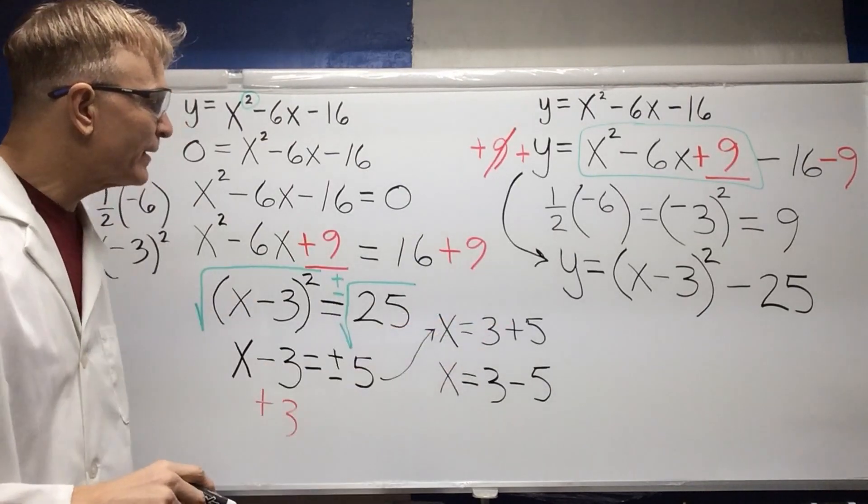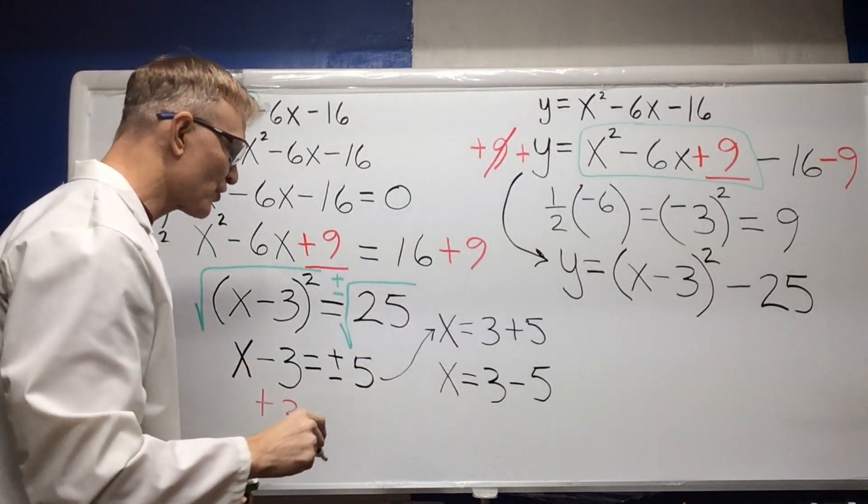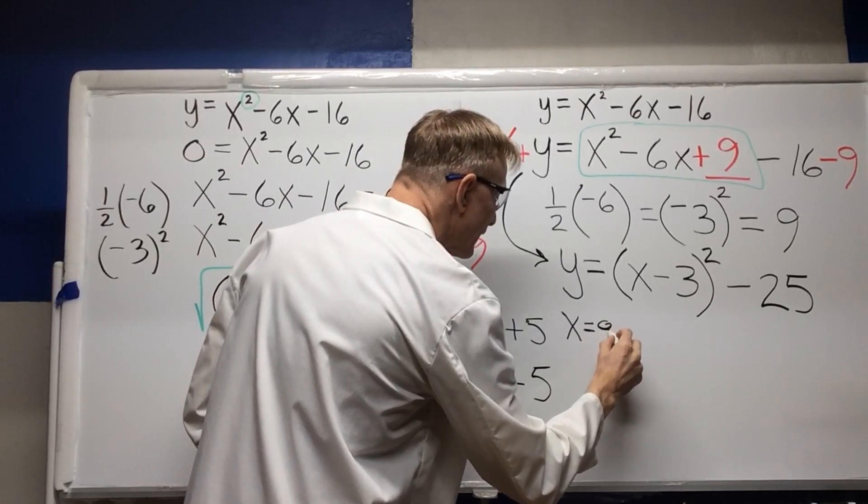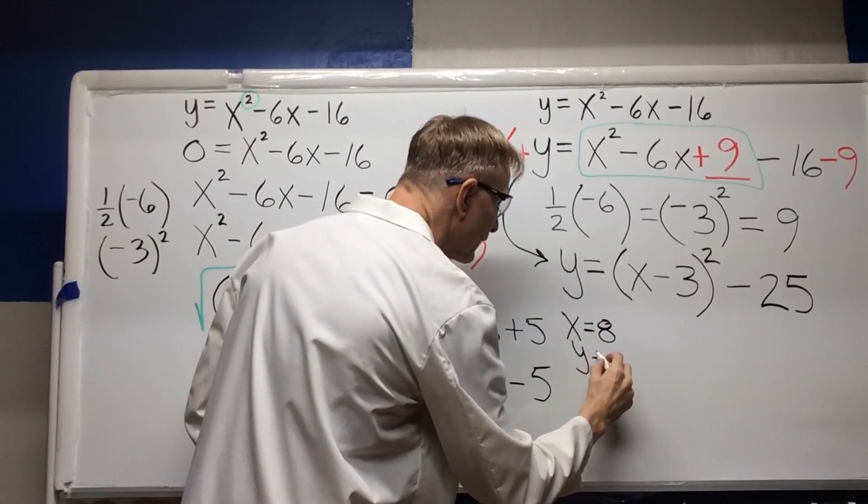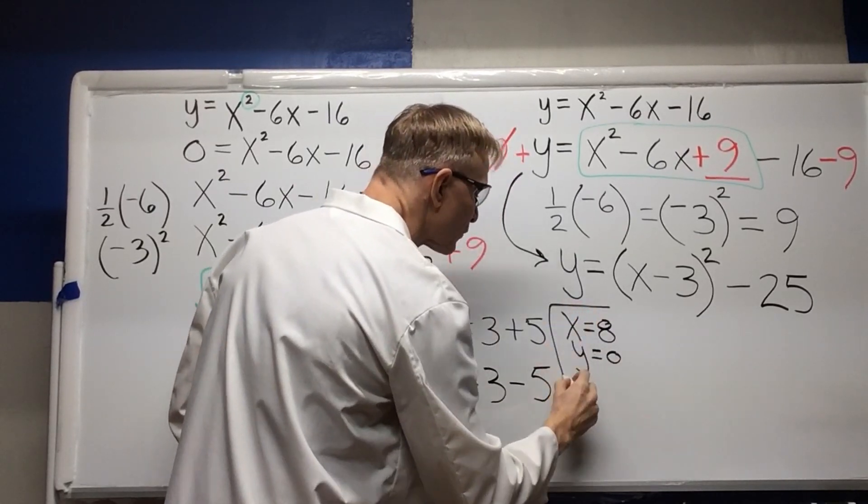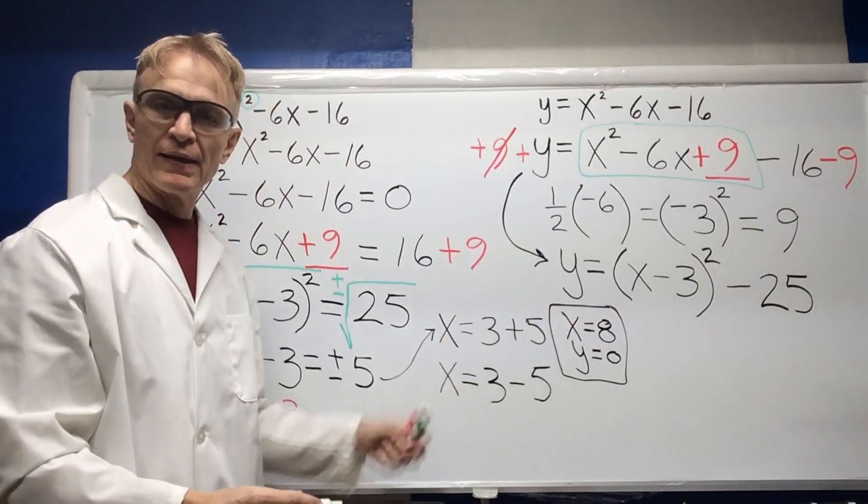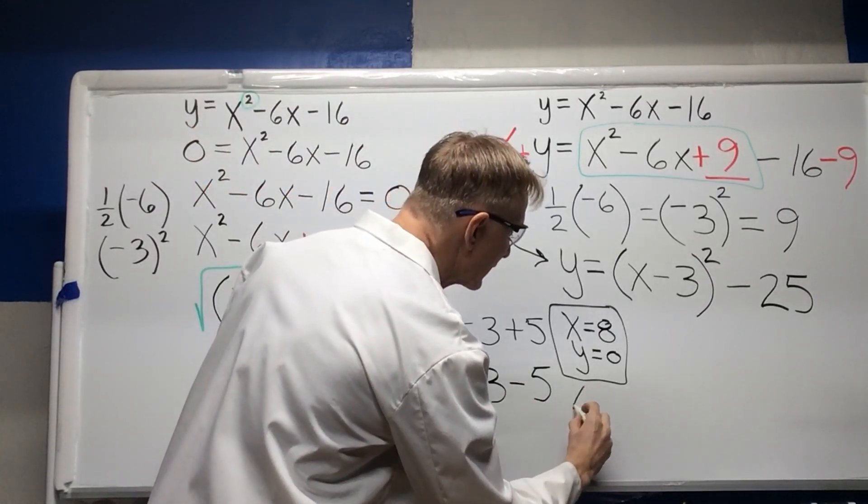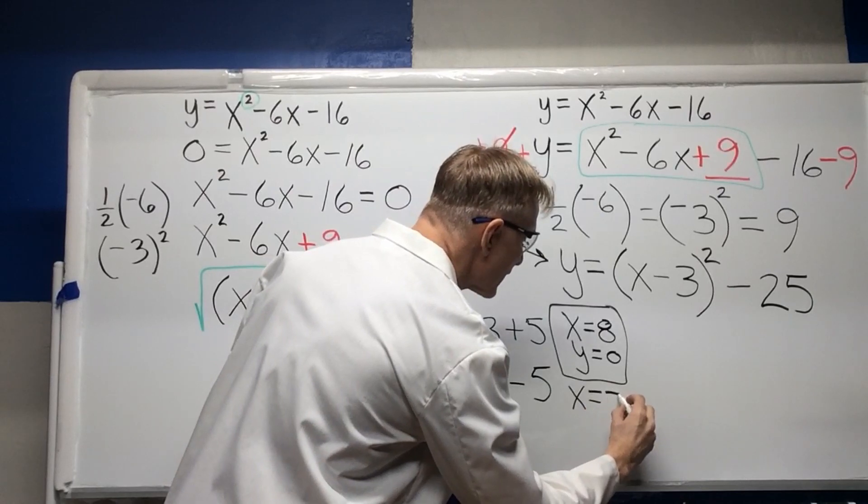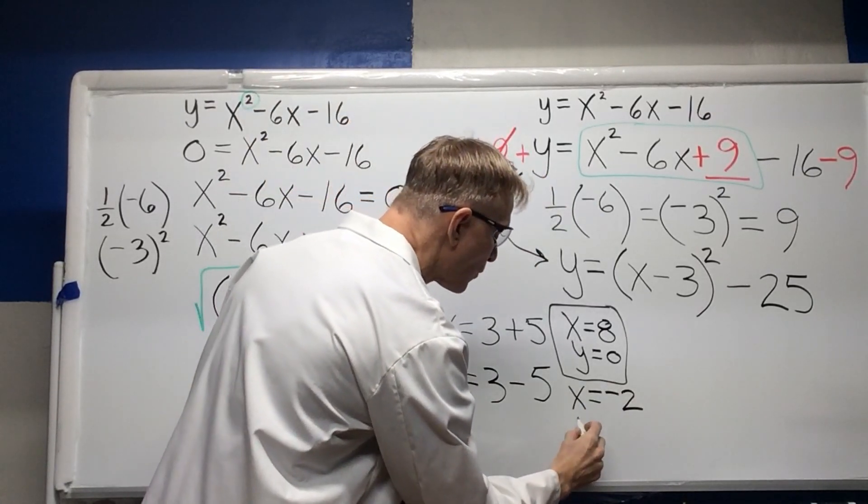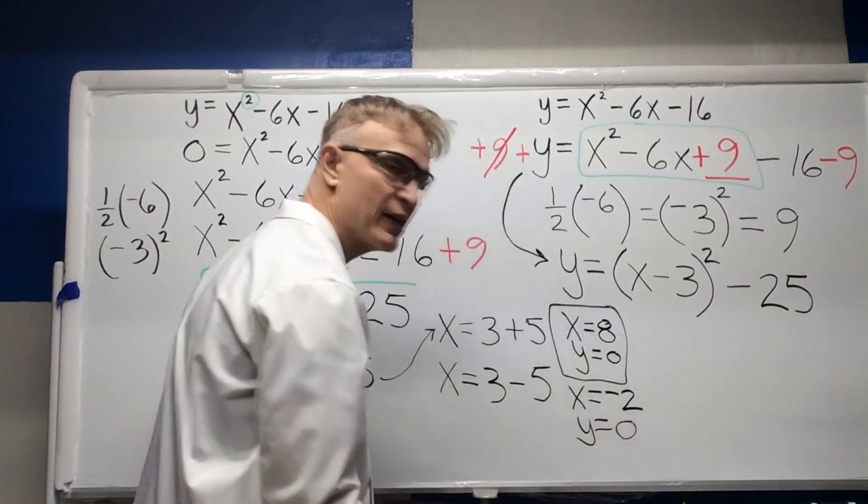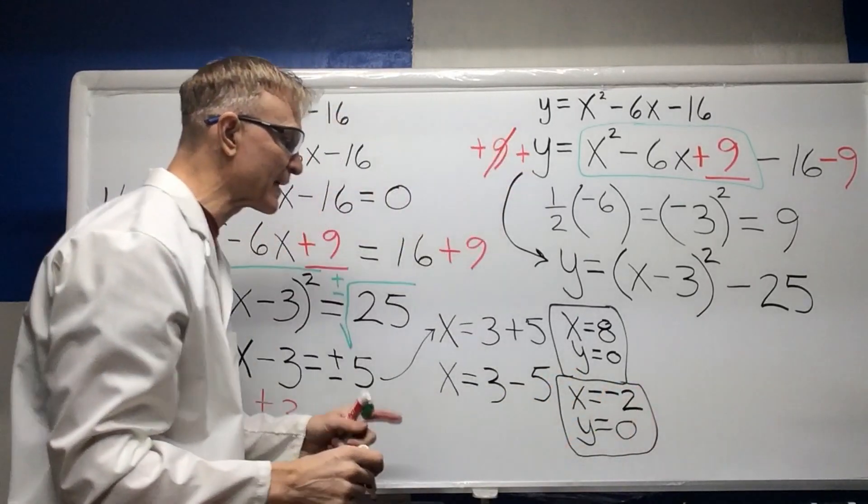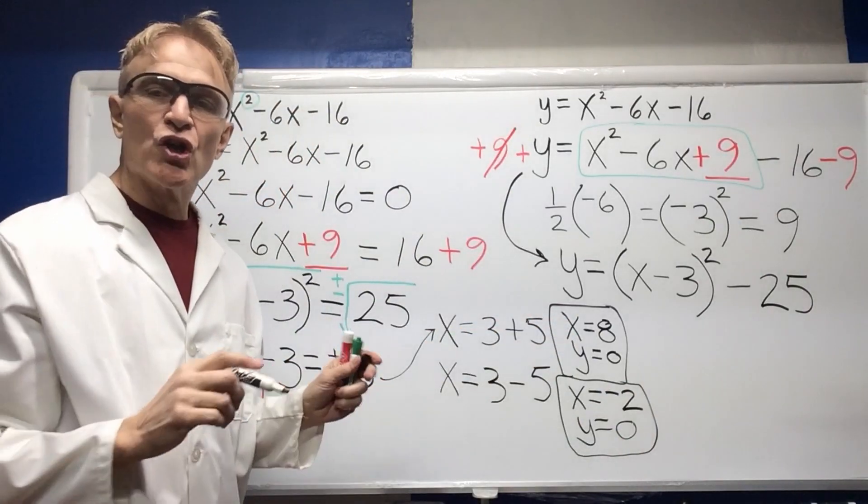Okay, so now when you add 3 plus 5, that's going to be 8. So we're going to have x equals 8, y equals 0. That's one point where it's crossing the x-axis. And then 3 minus 5 is going to be x equals negative 2, y equals 0. And that's going to be our other point where it's crossing the x-axis.